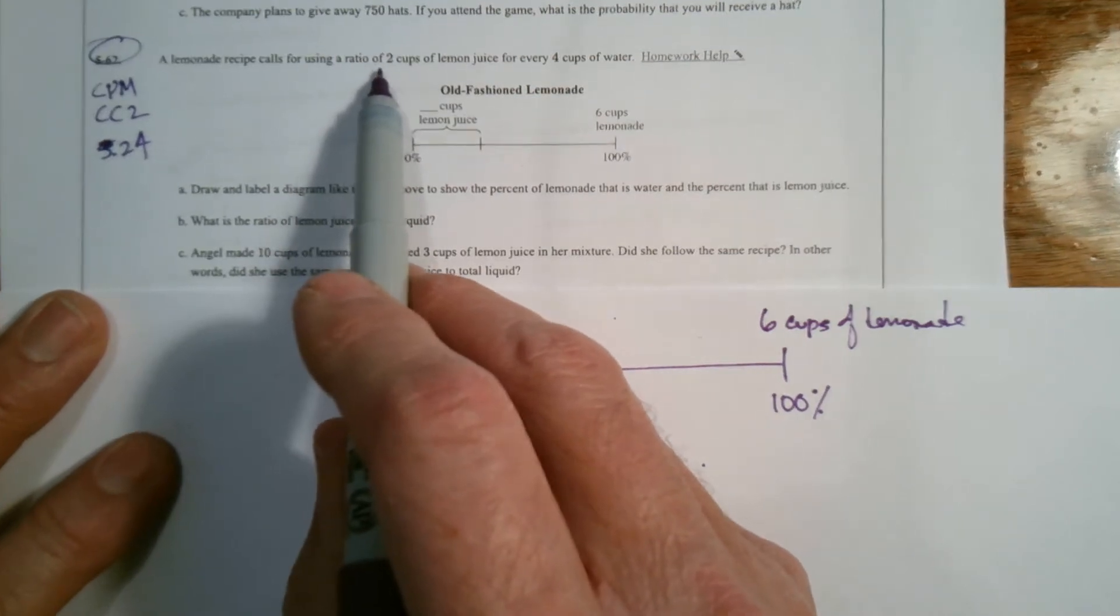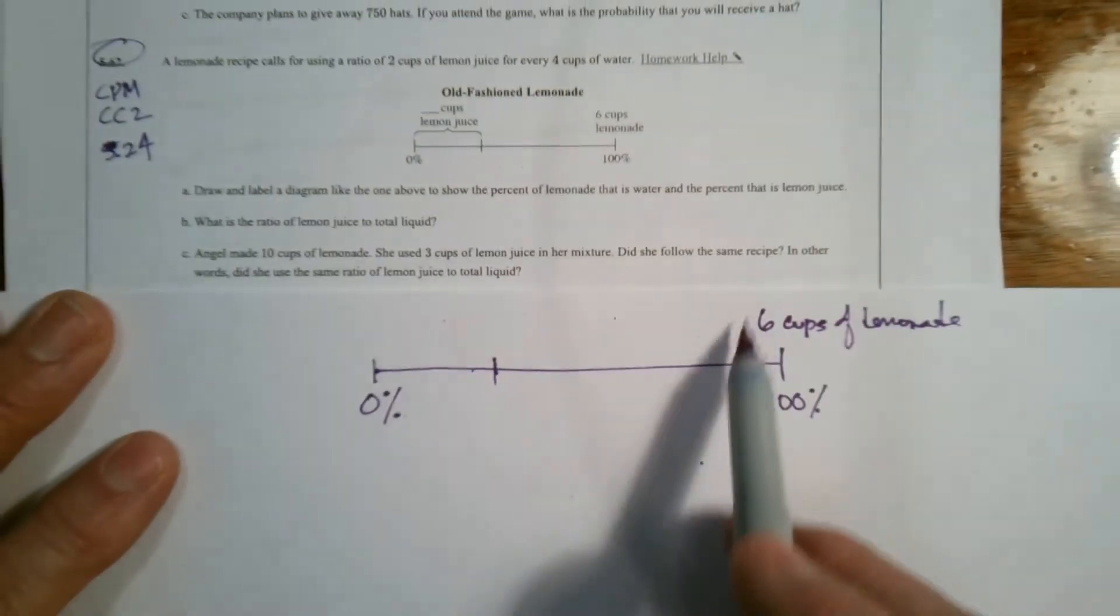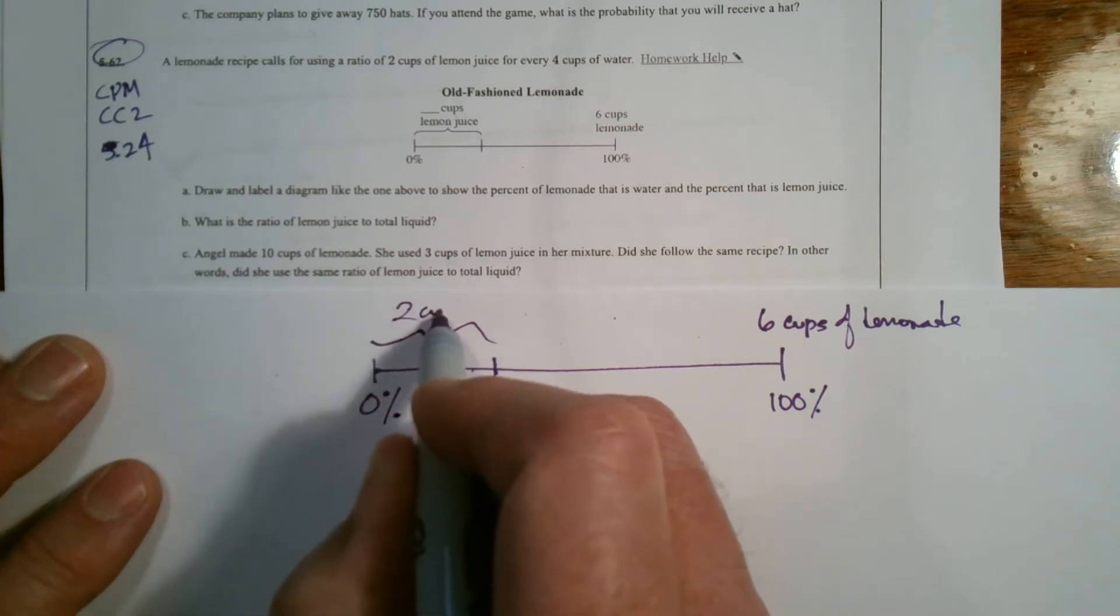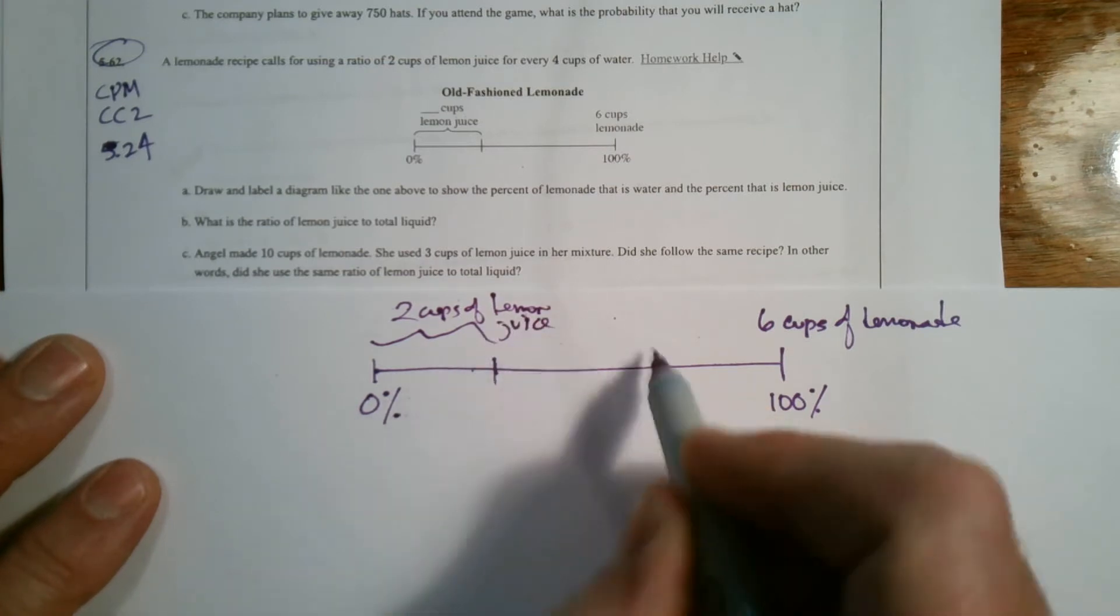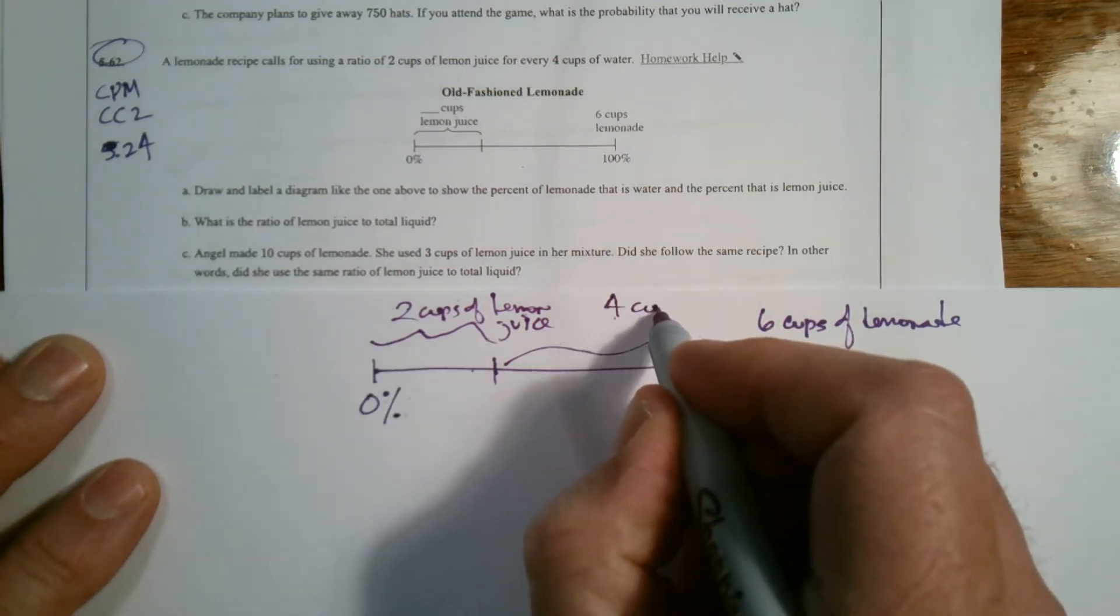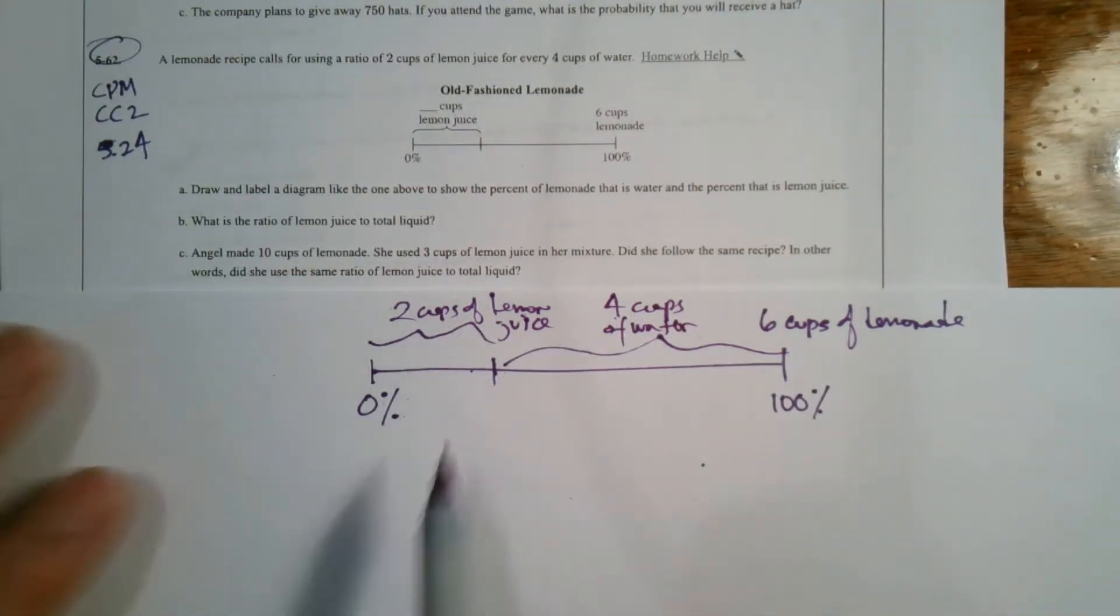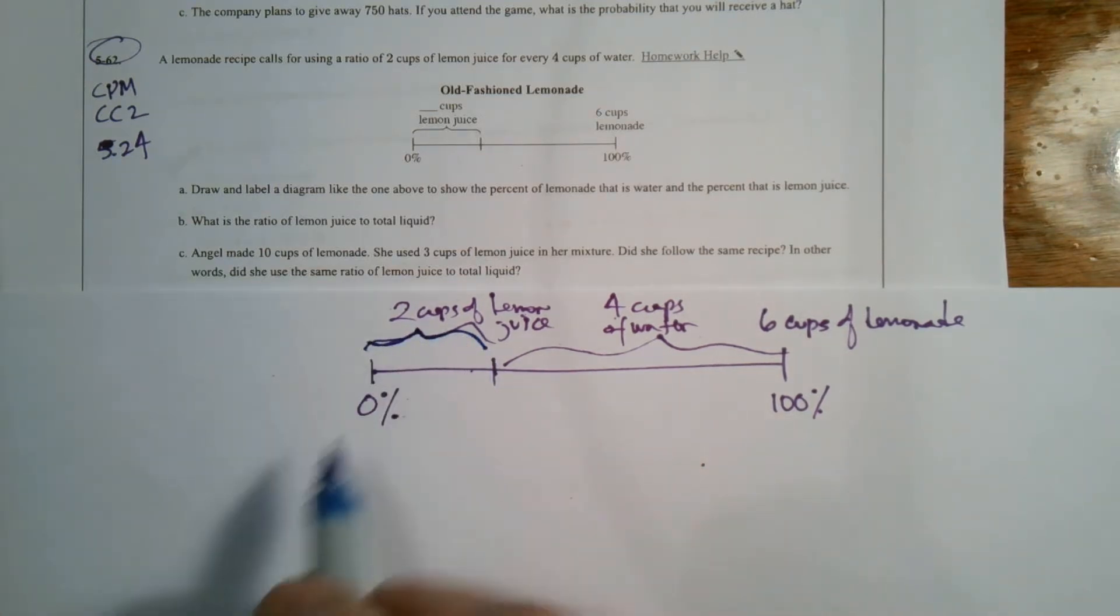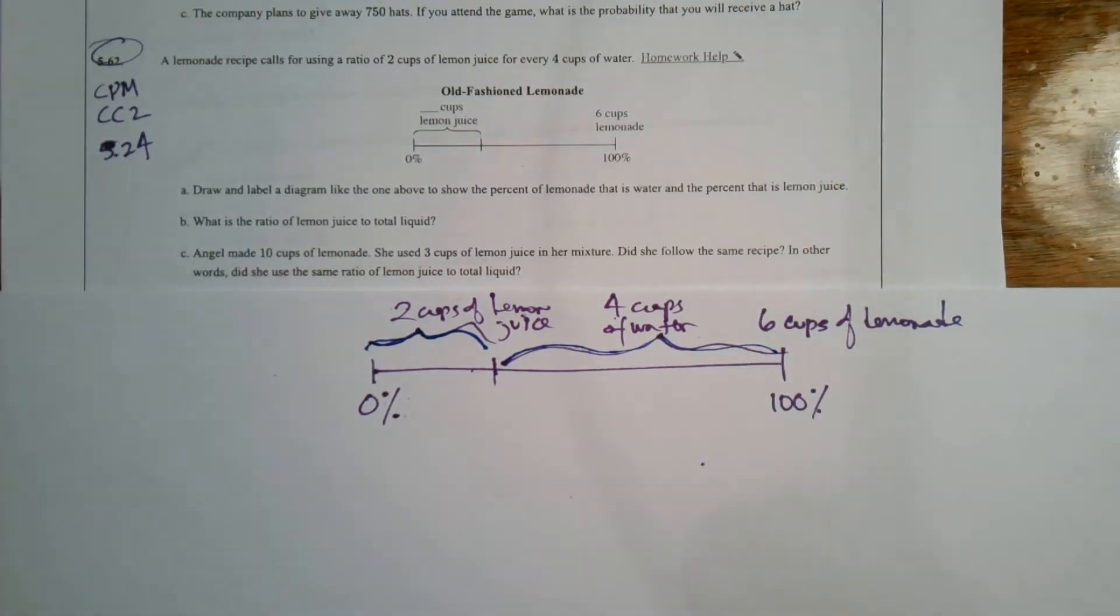So we know it's at zero percent and we know it goes up to 100%. They give us a little bit of a start and tell us the very end is six cups of the lemonade, the total liquid, the total lemonade. So here it says blank cups of lemon juice. Well, we know we've got two cups of lemon juice and four cups of water, which if you add two and four, it is six. So this right here is the two cups of lemon juice, and this would be the four cups of water.